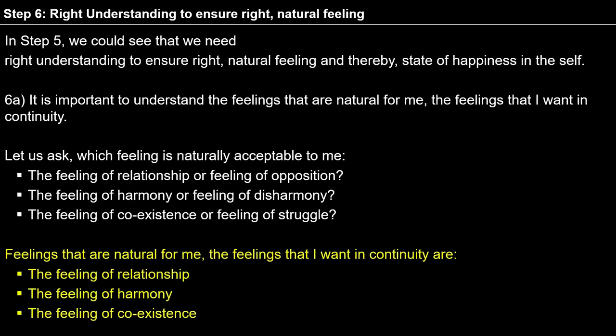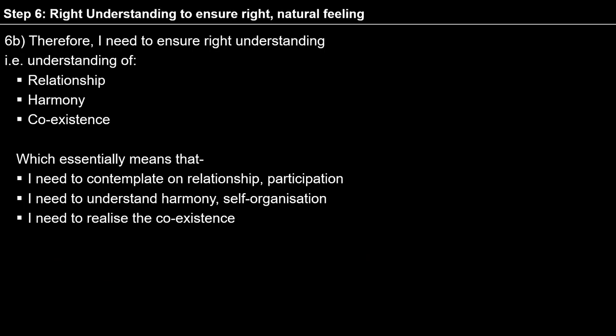Once I am able to see this, I can see where I was caught up in step 5 and why I was having those many assumptions — because I was not able to see this particular thing inside me. Now, when I am able to see this, I will try to ensure it. So what do I have to do to have the feeling of relationship, harmony, and coexistence? For that, we go to step 6b. Therefore, I need to ensure right understanding — understanding of relationship, harmony, and coexistence — which essentially means I need to contemplate on relationship, harmony, and self-organization, and realize coexistence.